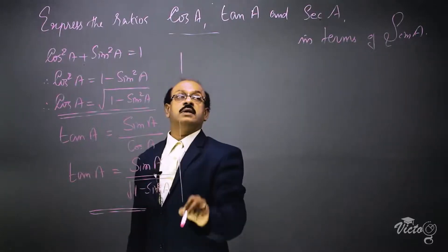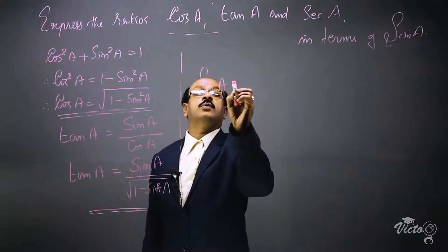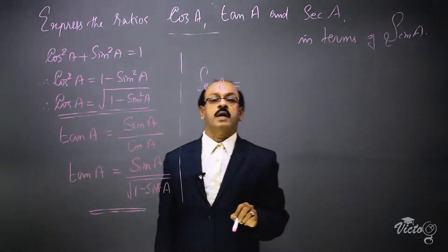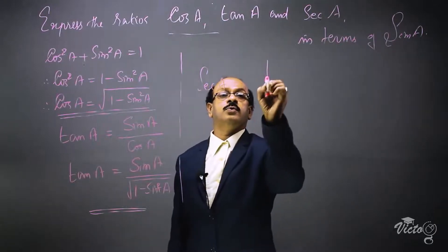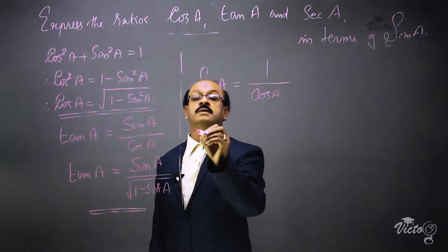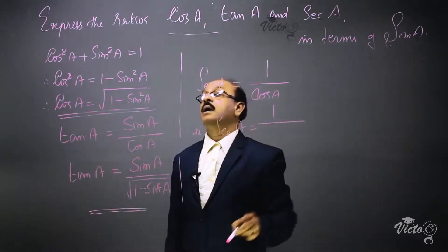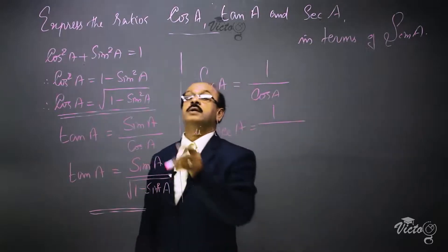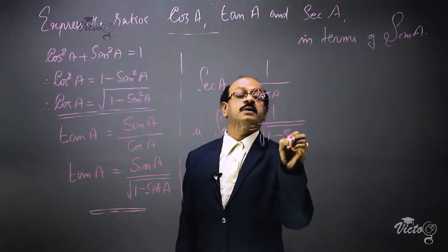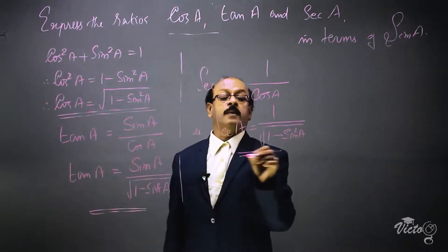The third one we have to change is sec A. Sec A is the reciprocal of cos, so sec A = 1 / cos A. Using the same result, we substitute cos A = √(1 - sin²A), giving sec A = 1 / √(1 - sin²A). Here also, the right side contains only sin A.